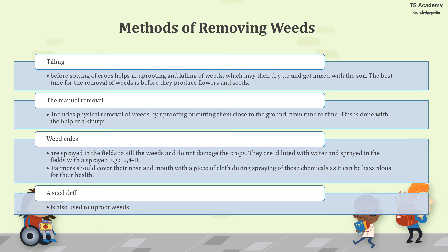Methods of removing weeds: First is tilling — before sowing the crop, it helps in uprooting and killing the weeds, which then dry up and get mixed with the soil. The best time for removal of weeds is just before they produce flowers and seeds. Manual removal includes physically uprooting or cutting weeds close to the ground using a khurpi. Weedicides are sprayed in fields to kill weeds without damaging crops; they are diluted with water and sprayed with a sprayer — an example is 2,4-D. Farmers should cover their nose and mouth during spraying as it can be hazardous to health. A seed drill is also used to uproot weeds.